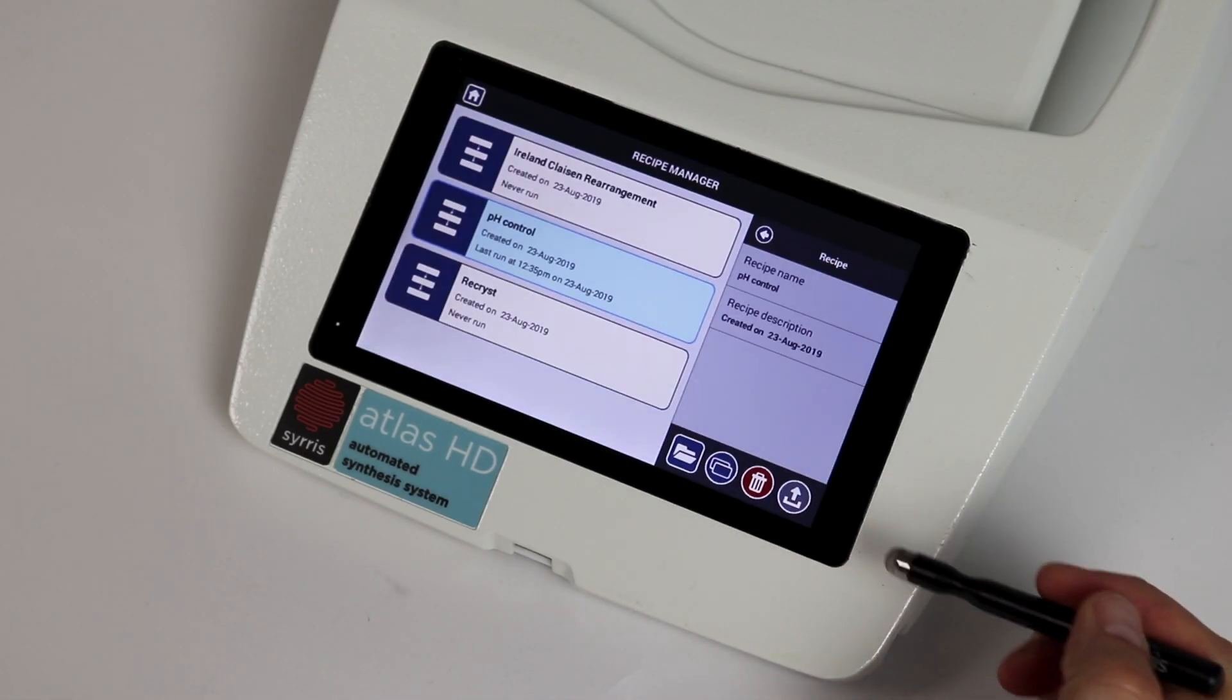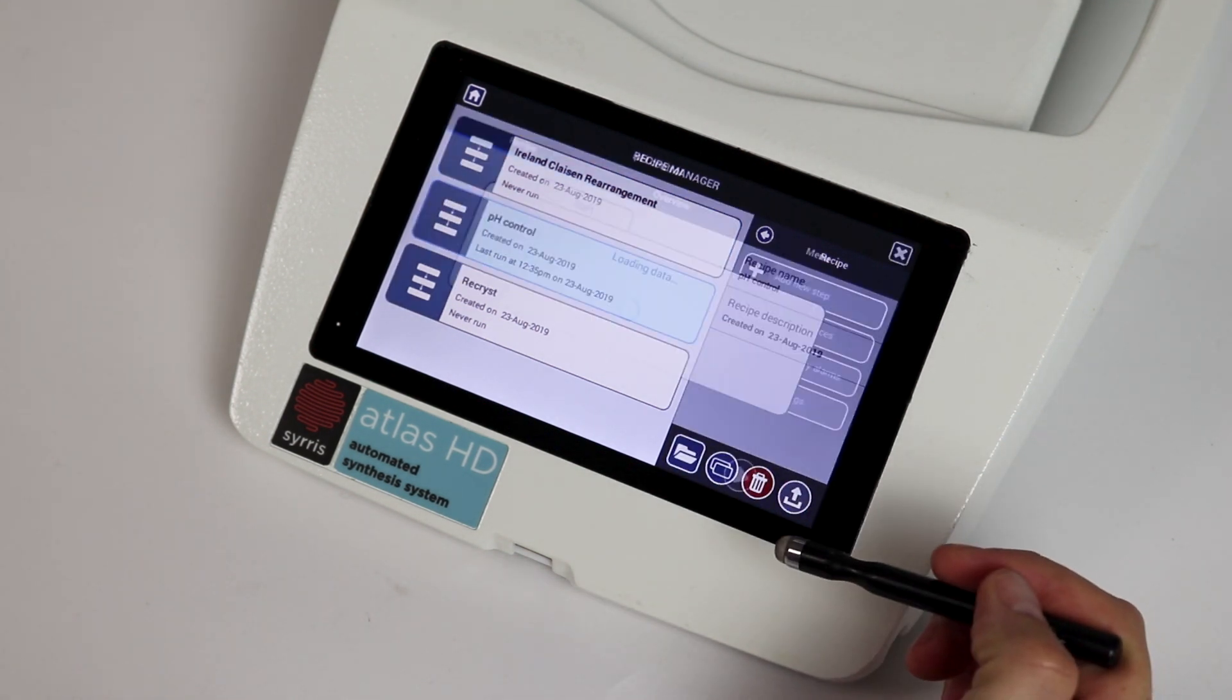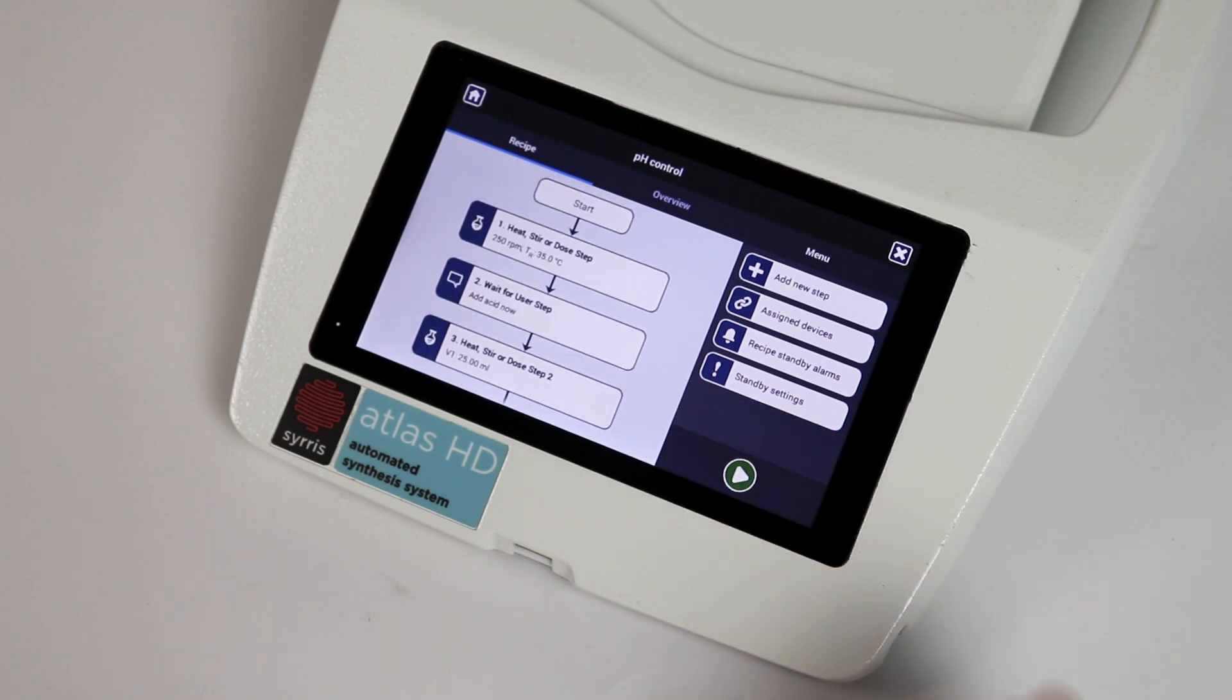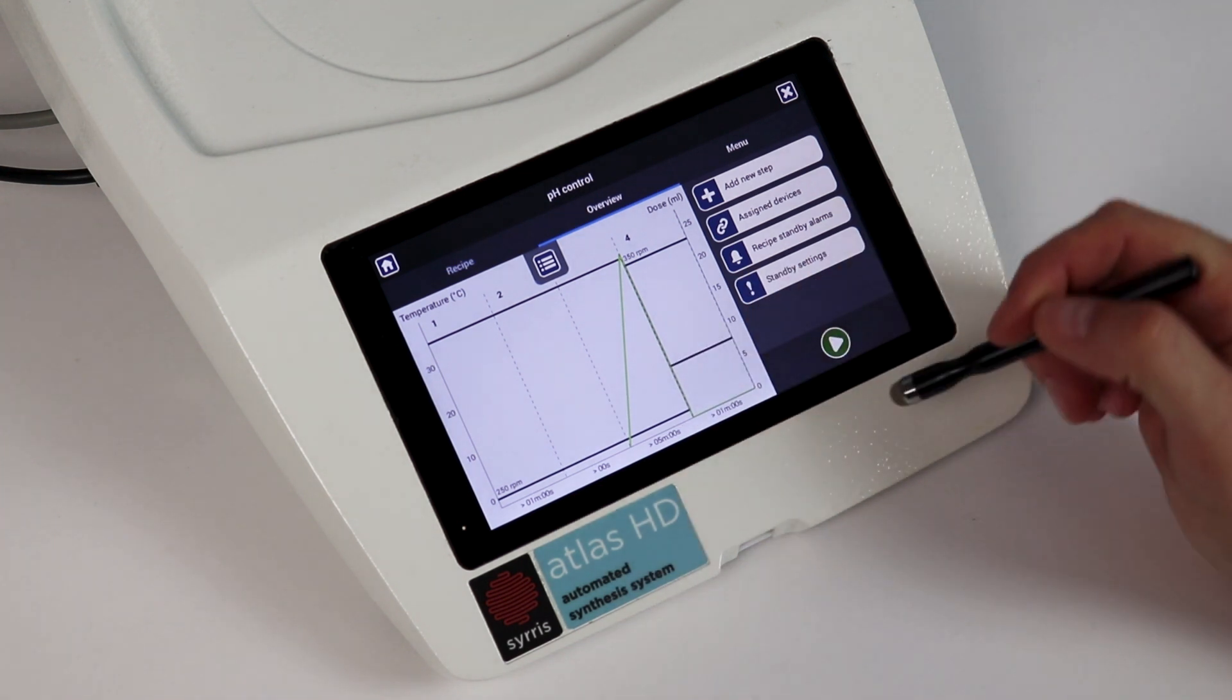Standalone automation allows users to store and control reaction protocols called recipes, which include heating, stirring, and dosing actions, ensuring your reactions are the same every time, improving batch-to-batch reproducibility and removing the need for tedious manual operations.